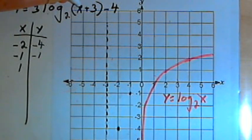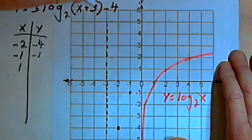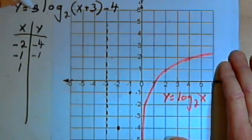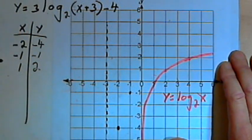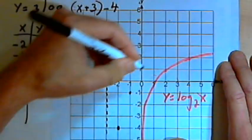Well, log base 2 of 4 is 2. So I've got this whole thing equaling 2, multiply it by 3, that's going to be 6, and then subtract 4, and that's going to be 2. So the last point I'm going to plot is going to be at (1,2). That will be up here.